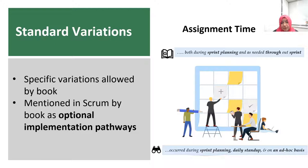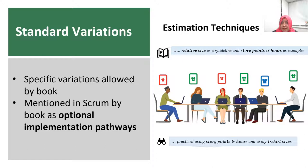A second example of standard variation is estimation technique. The Guide does not describe how to estimate, but the Primer recommends relative size as a guideline, with story points and hours as concrete examples of allowed variations. In practice, we found estimation was done using story points and hours. We also found that teams use t-shirt sizes, which is not mentioned as a specific example in the Primer, but follows the guideline around using a relative size measure.